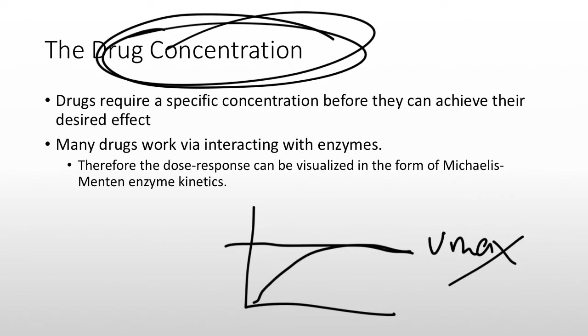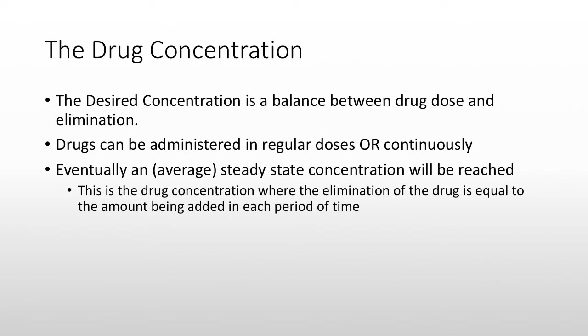If your volume of distribution is very high — if it goes not just to your bloodstream but into the extracellular fluid, the intracellular fluid (total body water), or into adipose tissue and is trapped there — that will alter its concentration. The higher the volume, the lower the concentration. The other thing that determines concentration inside the body is how fast it's eliminated. The desired concentration is a balance between how fast it's being brought in versus how fast it's being taken out.